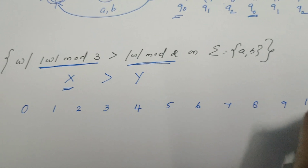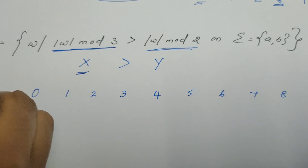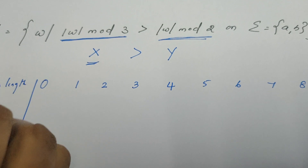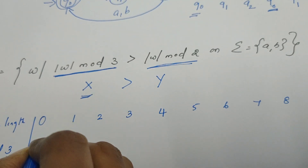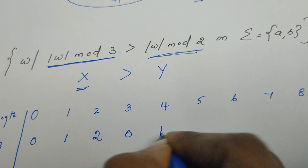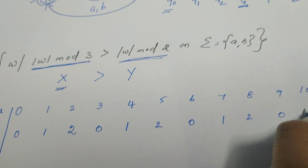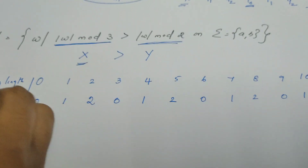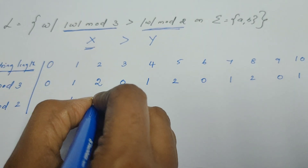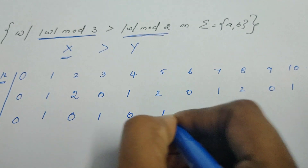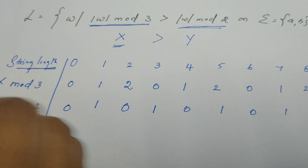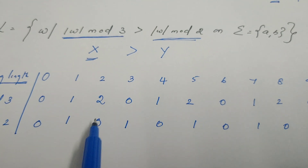Let us tabulate string lengths 0, 1, 2, 3, 4, 5, 6, 7, 8, 9, 10, etc. Dividing each by 3 gives remainders: 0, 1, 2, 0, 1, 2, 0, 1, 2, 0, 1 — this is x. Dividing each by 2 gives remainders: 0, 1, 0, 1, 0, 1, 0, 1, 0, 1, 0 — this is y. We need to select only those string lengths where x is greater than y.